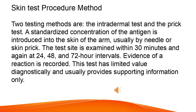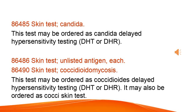Skin test procedure method. Two testing methods are the intradermal test and the prick test. A standardized concentration of the antigen is introduced into the skin of the arm, usually by needle or skin prick. The test site is examined within 30 minutes and again at 24, 48, and 72-hour intervals. Evidence of a reaction is recorded. This test has limited value diagnostically and usually provides supporting information only. This test may be ordered as candida delayed hypersensitivity testing, DHT or DHR.